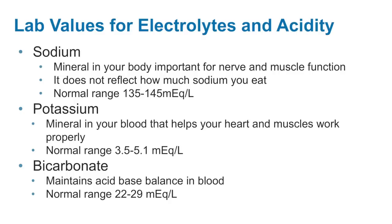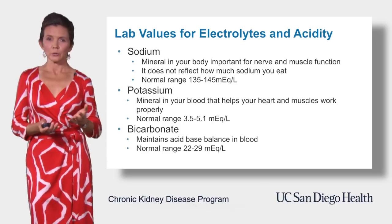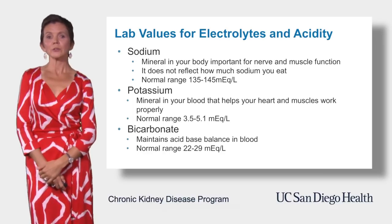Potassium is a mineral in your blood that helps your heart and muscles work properly. If the level is too high it can change your heartbeat and lead to potentially dangerous arrhythmia. Normal range is between 3.5 to 5.1. If potassium level in your blood gets too high, we will educate you on how to avoid foods which are high in potassium and use medications to help maintain a healthy potassium level.